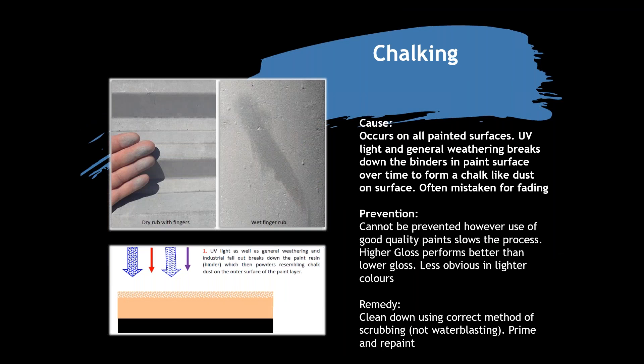We'll start with a general one. Chalking occurs on all substrates and all painted surfaces. When UV light and general weathering break down the binders in the paint surface over time, you get that chalk-like dust on the surface. It's often mistaken for fading because the colour appears to turn white. Blue arrows in our schematics indicate moisture, red arrows indicate UV.